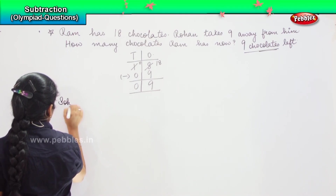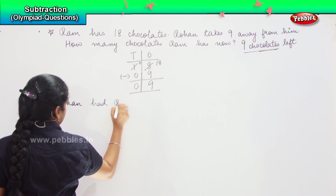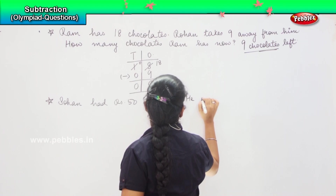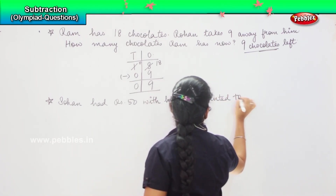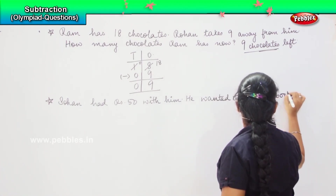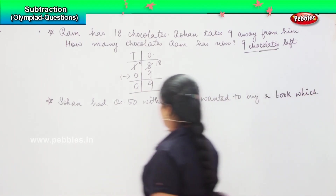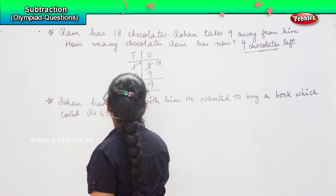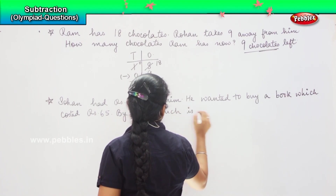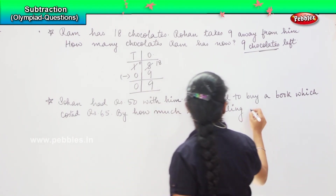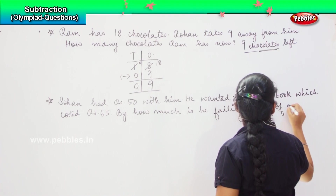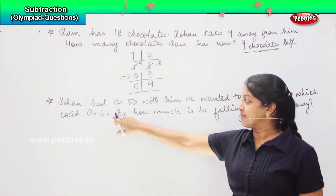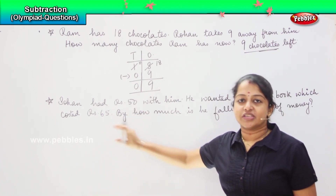Sohan had 50 rupees with him. He wanted to buy a book which cost 65 rupees. So, by how much is he falling short? Did you understand, children? Here it says that Sohan is having 50 rupees with him. He wanted to purchase a book but that book cost him 65 rupees, which means that the money he has in hand is not sufficient for him to buy this book.